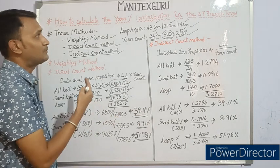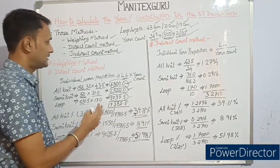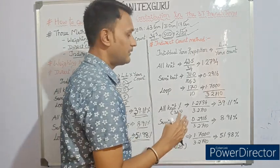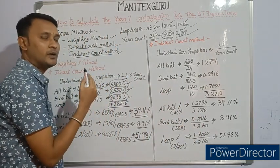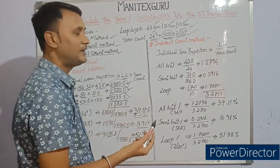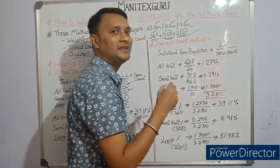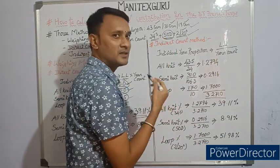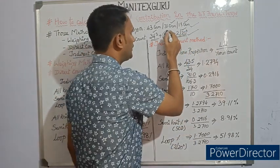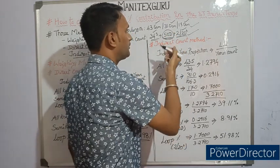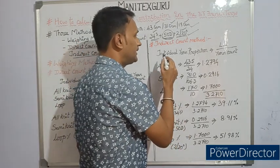This is how we calculate yarn percentage contribution in a three-thread French terry or fleece fabric without any physical swatch — that is the direct count method. Now for the indirect count method: in the direct count method we converted all counts to direct count (denier). In the indirect count method, we convert all counts to indirect count (Ne). The all-knit 34s is already in Ne, the looper 2-bar 20s is taken as 10s count (also Ne), and we convert 50 denier to Ne: 5315 divided by 50 gives 106.3 counts.